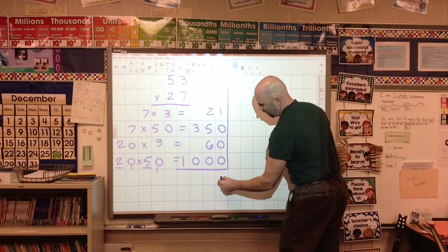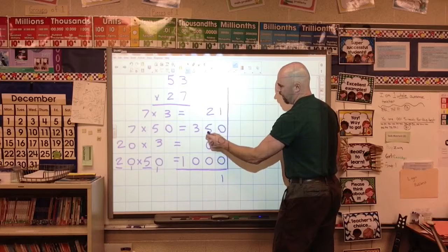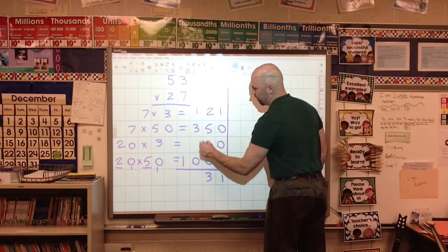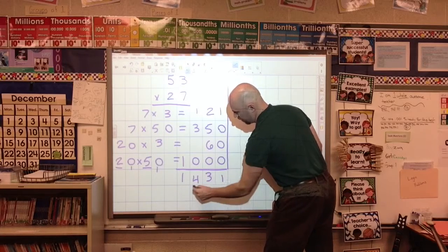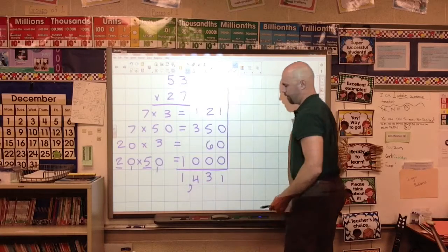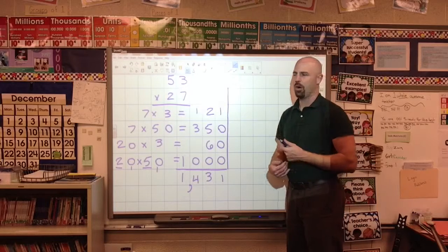We've got our four parts here. Now we just put everything together. 1, 11, 13. 3 down, carry the 1. 4, 1, 1, 2, 3. And your answer is 1,431.